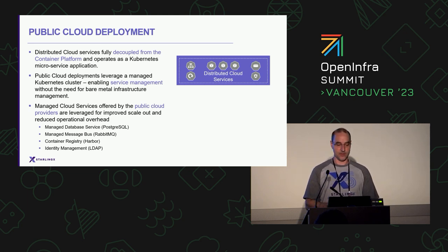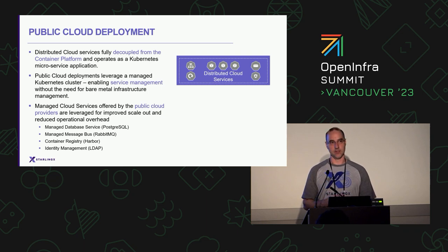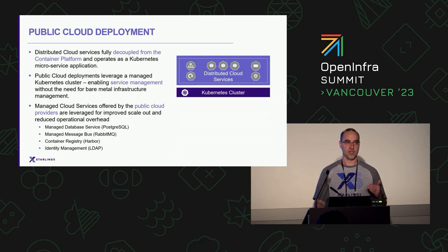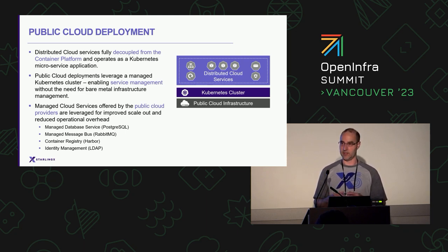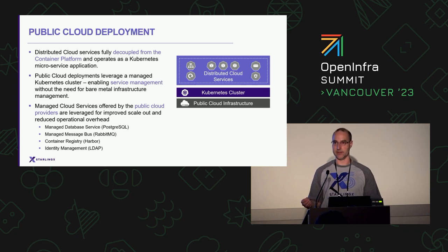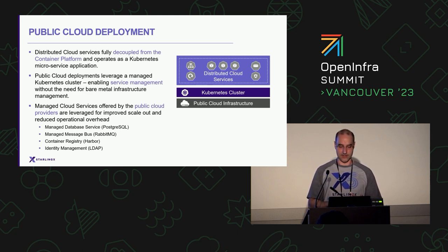It all starts with the decoupling. The distributed cloud services would be a completely containerized microservice architecture. Today this is integrated into our system controller function within StarlingX — managed services on the platform. By decoupling them more we gain the flexibility to run on any of the community's clusters. In the public cloud configuration we leverage the managed infrastructure from the public cloud, so we don't need that extra layer of StarlingX infrastructure management at this particular component.